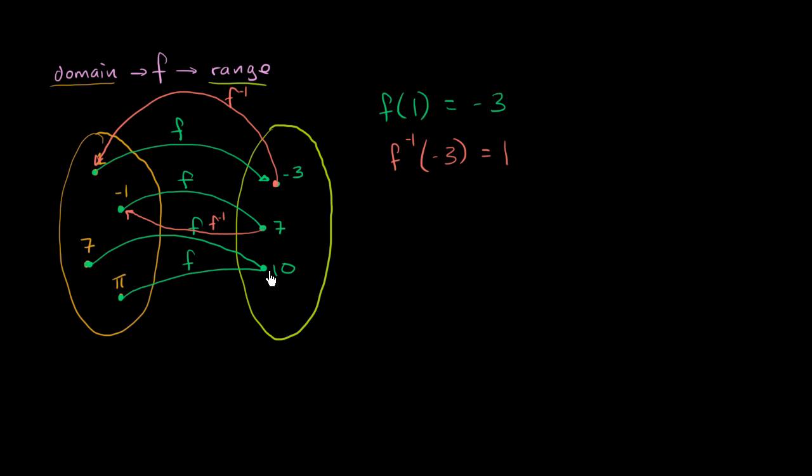But now we have something strange happening. Let me write this down. f inverse of 7 is equal to negative 1. That makes sense, because we already knew that f of negative 1 is equal to 7. But now something interesting happens over here.